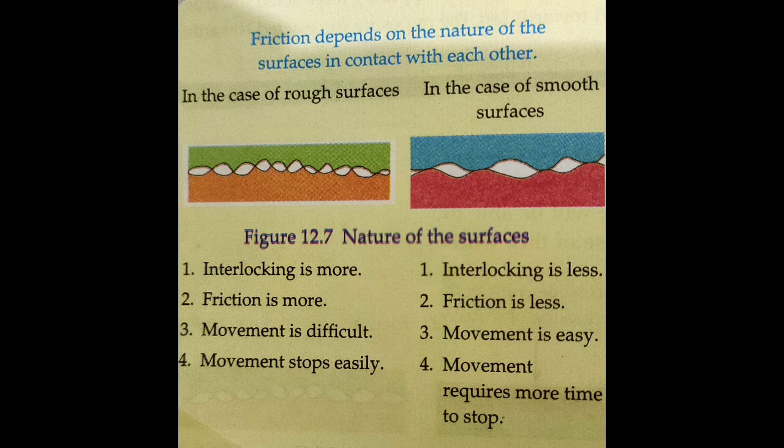Friction depends on the nature of the surface in contact. Comparing rough and smooth surfaces: on a rough surface, when two surfaces come into contact — suppose the tire of a vehicle or our shoe sole against the road — the interlocking between the road and our shoes, or the road and the vehicle's tire, will be more due to the roughness. That friction will be more.